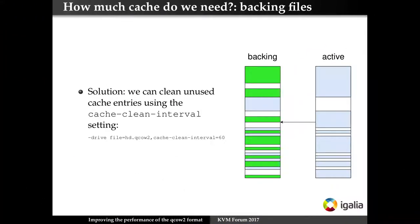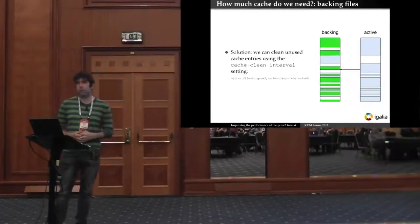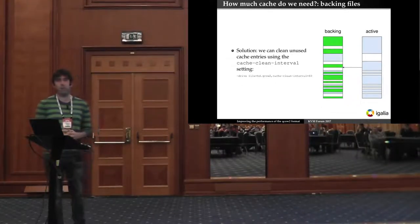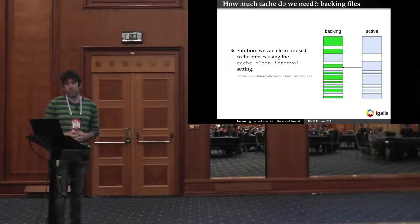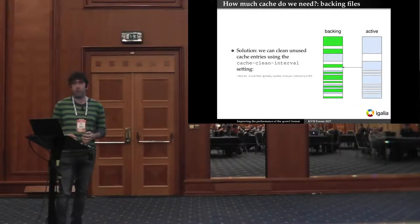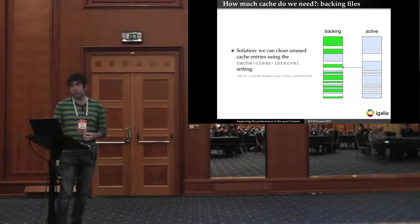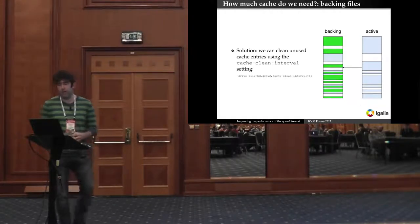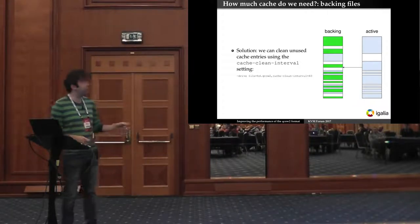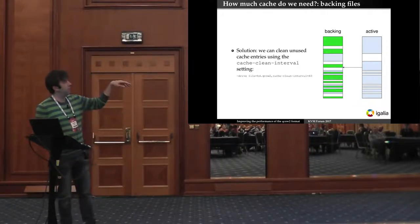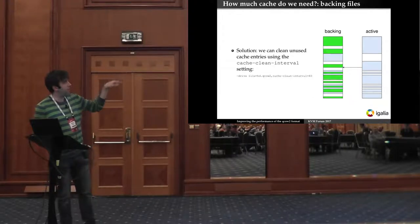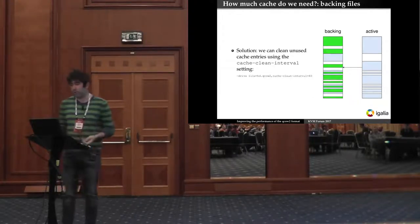There's a way to work around this and this was introduced a couple of years ago and it's a setting called cache clean interval and the way this works is that you define a timeout and then QEMU checks the cache every 60 seconds or whatever you decide and removes the entries that haven't been used since then. This way all the entries that were necessary to address the areas in green would disappear and the memory would be saved.